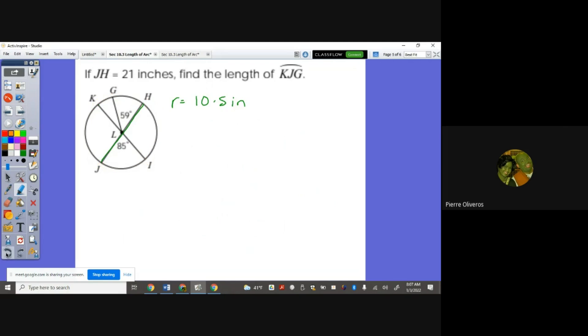The right way should be K, J, G. So we need the entire angle there. So what do we need to do? First, we need to know the radius is 10.5. We need to know the angles here. Let's see.